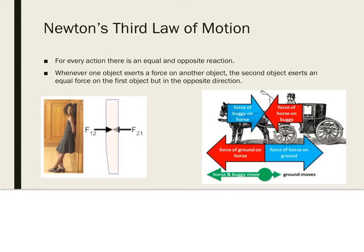Newton's third law of motion states that for every action, there is an equal and opposite reaction. Whenever one object exerts a force on another object, the second object exerts an equal force on the first object but in the opposite direction. Consider a girl leaning against a wall — the girl exerts a force on the wall by leaning against it, and the wall exerts a force on the girl that keeps her from falling over backwards. These forces are equal in size but opposite in direction.